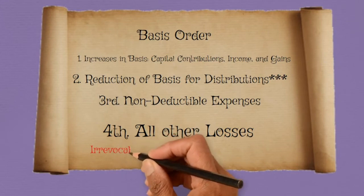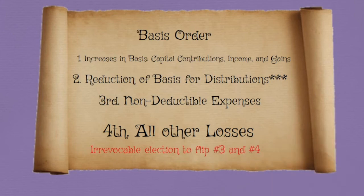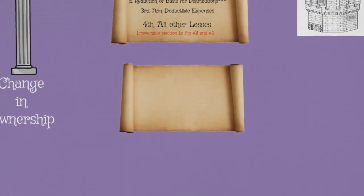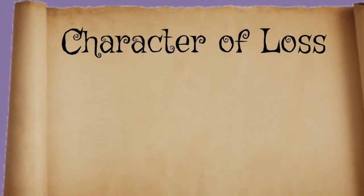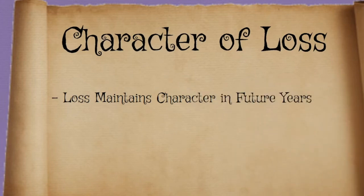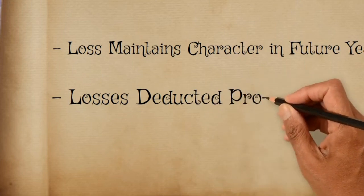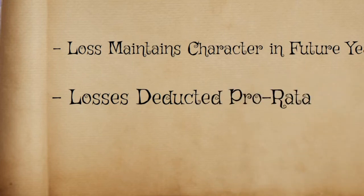Another note on ordering: there is an irrevocable election to flip steps three and four to put non-deductible expenses last in the ordering. There are some wrinkles with this election, so we'll keep this exercise friendly and assume the default ordering. Now let's talk about character of loss. Losses maintain their character when carried forward. But in a situation where I have different types of loss, which one do I use first? If I have $10,000 in basis, $10,000 ordinary loss, and $10,000 capital loss, I can't choose to use the more beneficial ordinary loss first. Loss is deducted pro rata by the character of that loss. So I would use $5,000 ordinary and $5,000 capital against basis, and carry the same remaining amounts forward.